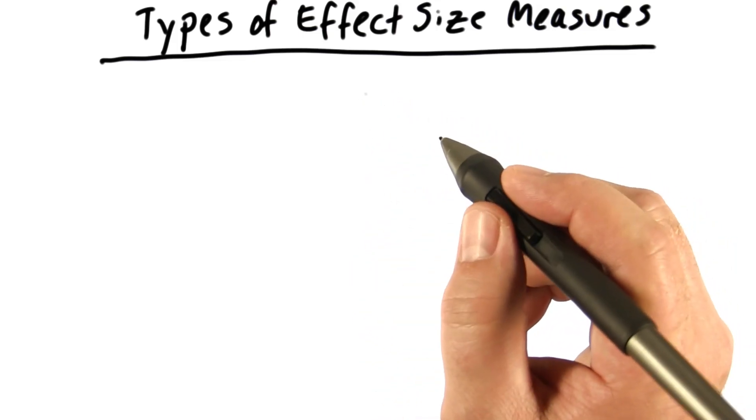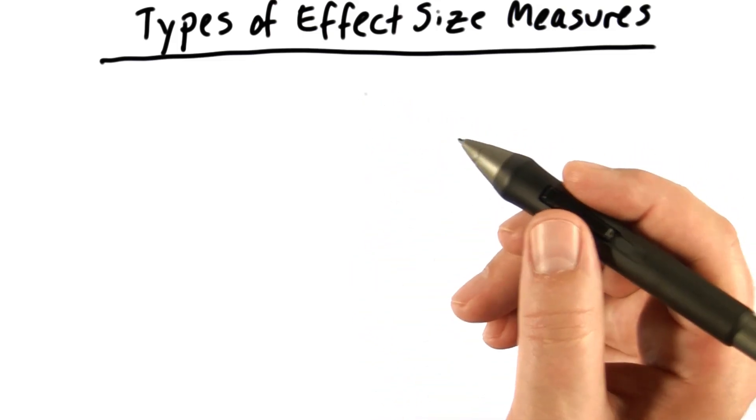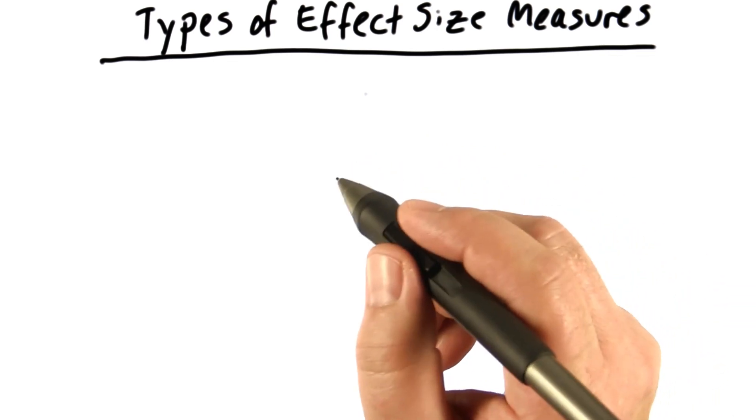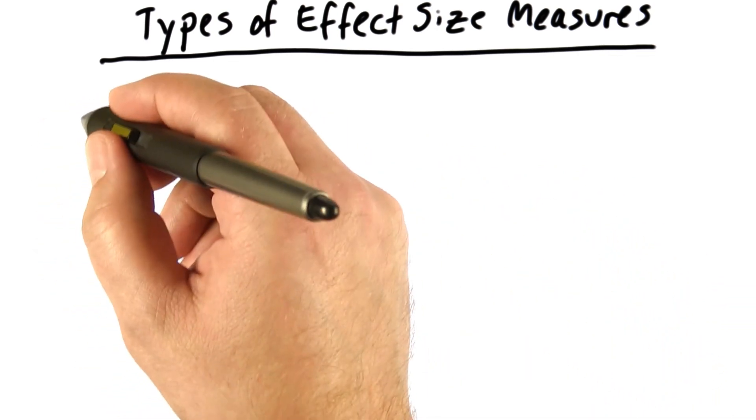Now are there many types of effect size measures? I can think of at least six or seven right now. But most of them fall under two main groups, two families if you will.